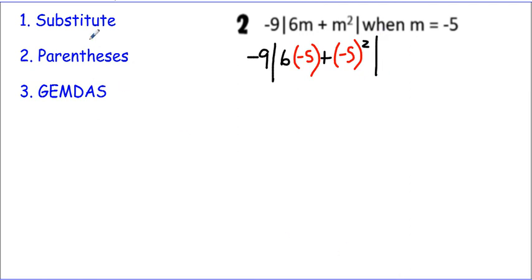We're going to work with our groupings. We substitute, we use our parentheses, now we're going to do our GEMDAS, our grouping. So we have to get rid of this inside here first. We're going to do this exponent first within the grouping.